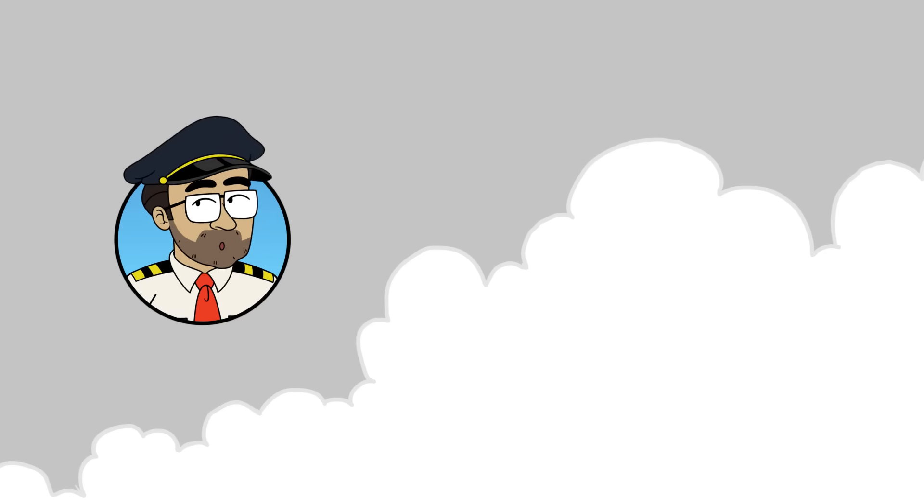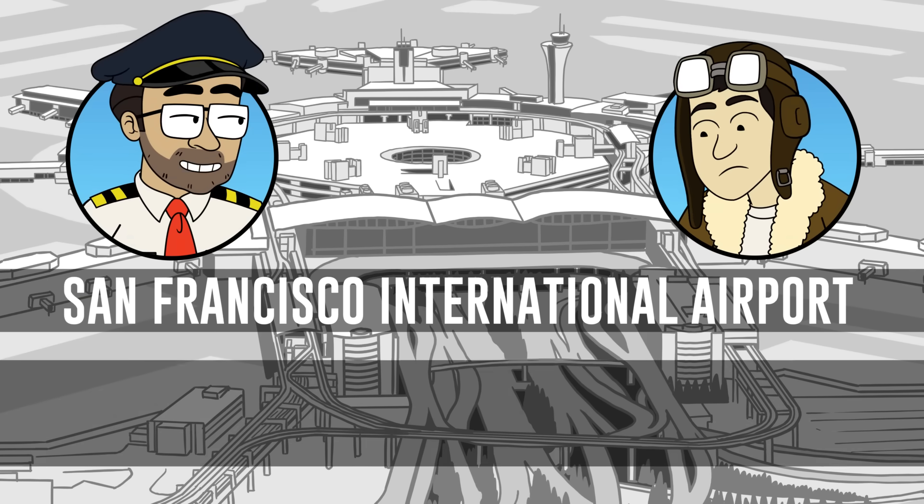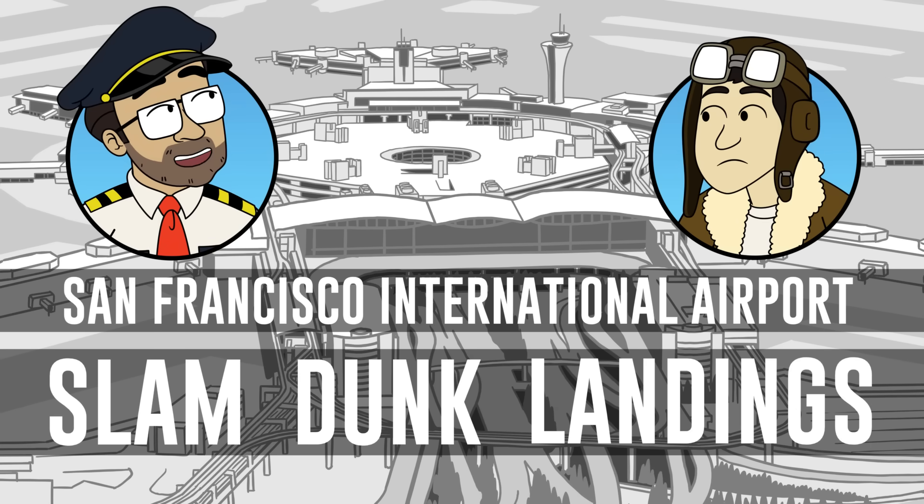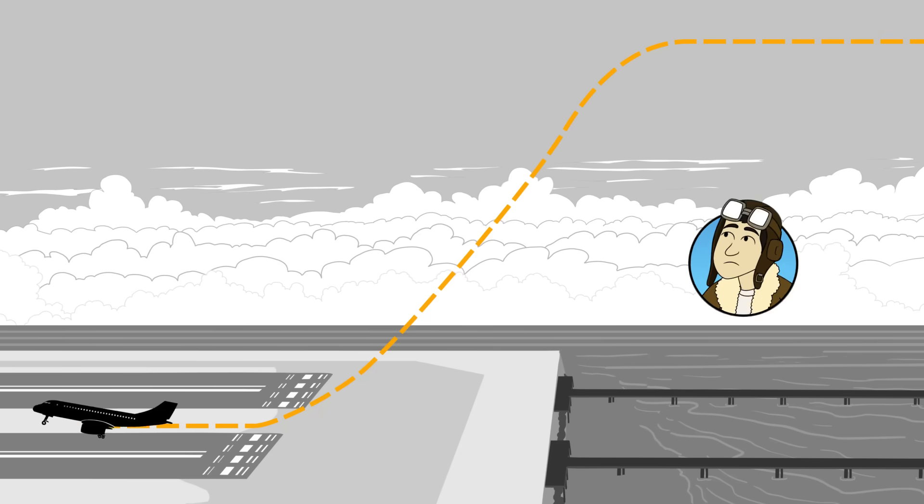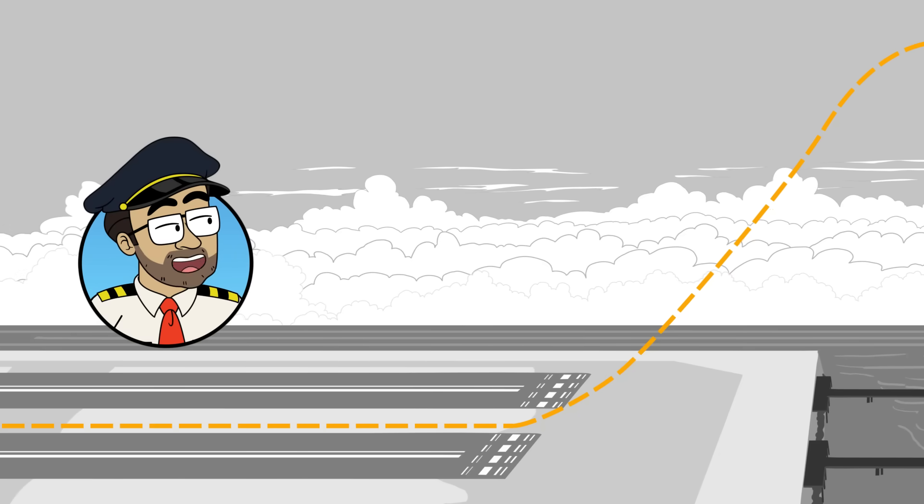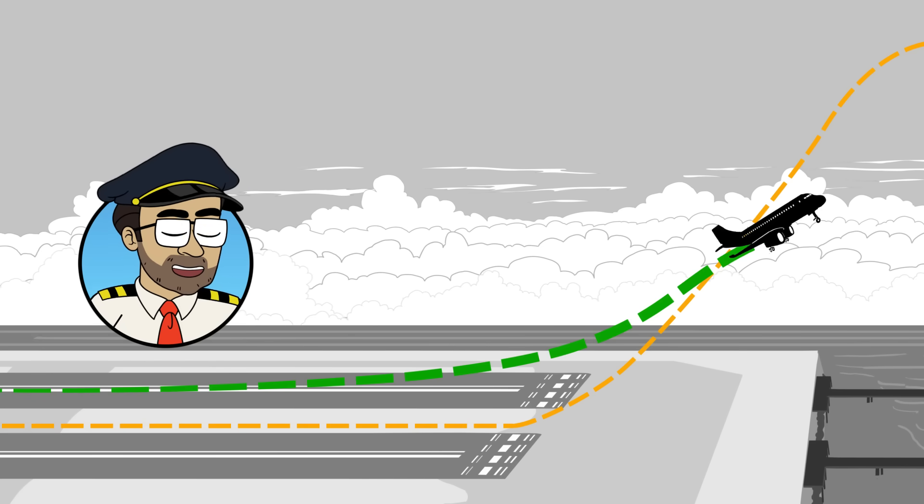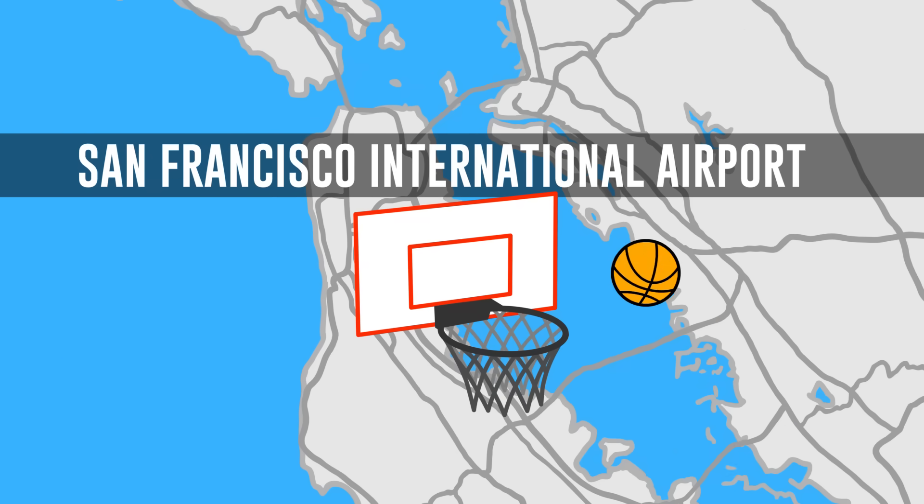I've seen interviews with airline pilots who talk about landing at San Francisco. And they have a term for it. They call it slam dunk landings. Because they say that they're often instructed to stay high and then descend very quickly at the last second to come into the airport. And they say that because they have to leave lower altitudes open for planes that are taking off that might be needing to turn. That's just because it's a busy airport. Exactly. Slam dunk landings.